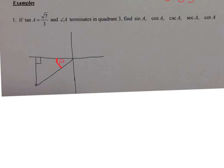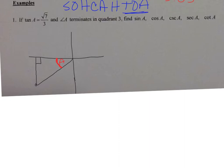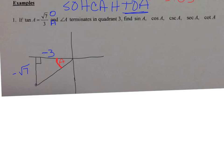Now you want to label this triangle. Remember SOH-CAH-TOA — tangent is opposite over adjacent. So your opposite side is the square root of 7, and your adjacent side is 3. Since we are on the coordinate plane, when you go to the left of 0 on the x-axis, those values are negative, so you have to label this 3 as negative. And your values going down into quadrant 3 — your y values are negative — so you have to make this negative as well. Those are called directed distances. The reason they're not negative in the ratio is because a negative divided by a negative comes out to be a positive.